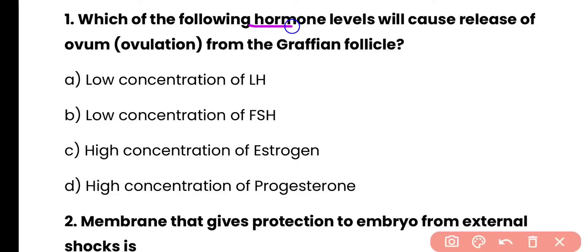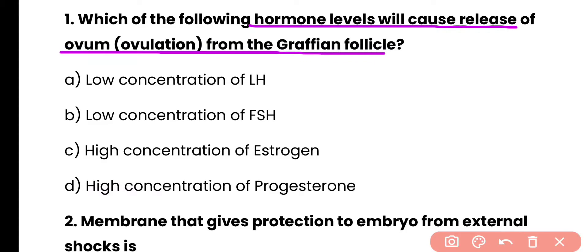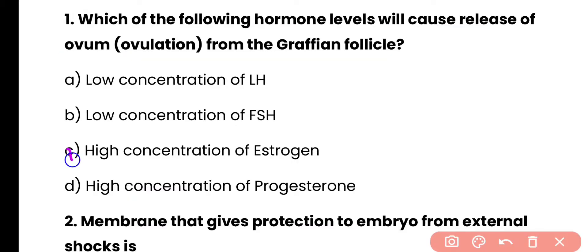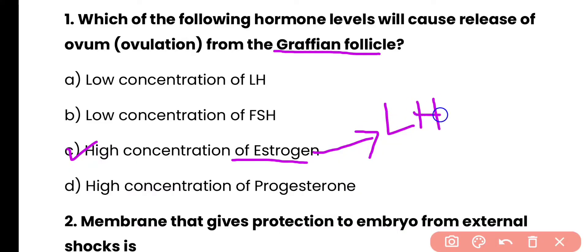Question 1: Which hormone level will cause the release of ovum (ovulation) from the Graafian follicle? Options: low concentration of LH, low concentration of FSH, high concentration of estrogen, high concentration of progesterone. Correct answer is option C. The Graafian follicle produces high concentration of estrogen, which stimulates the anterior pituitary to release luteinizing hormone, and this LH causes the release of the ovum in the ovulation process.